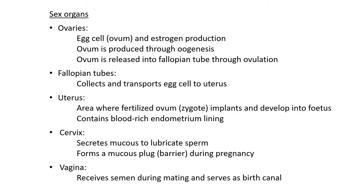The fallopian tubes collect and transport the egg cell to the uterus. The uterus is the area where the fertilized ovum — otherwise known as the zygote — is implanted and develops into the fetus. The uterus also contains a blood-rich endometrium lining, which is very important because it sustains pregnancy. The endometrium is a thick tissue area with a lot of blood, meaning there are nutrients to feed the developing fetus, and it also facilitates the removal of waste products from the fetus to the mother's body.